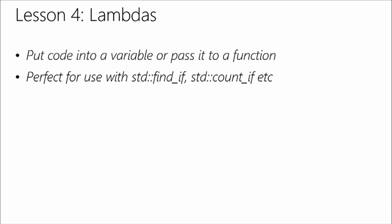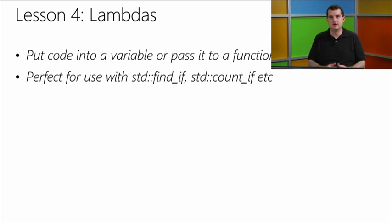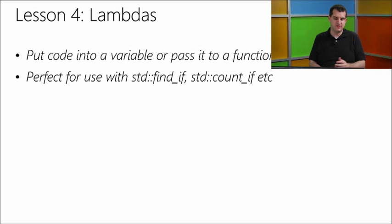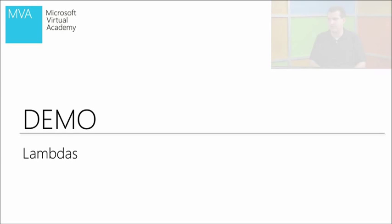Next we're going to cover lambdas, a feature introduced in C++11 and available in Visual C++ since 2010. Lambdas give you a way to define unnamed functions — you can define a function locally within another function. They make using algorithms a lot easier because you can provide extra logic, for example changing how a sort orders elements. They're especially useful for algorithms like `find_if` or `count_if`, which count elements for which a predicate returns true — for instance, counting all even elements using a lambda that tests if an element is even.